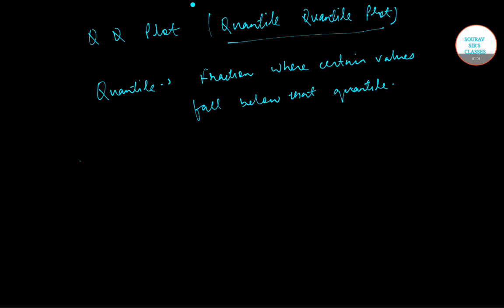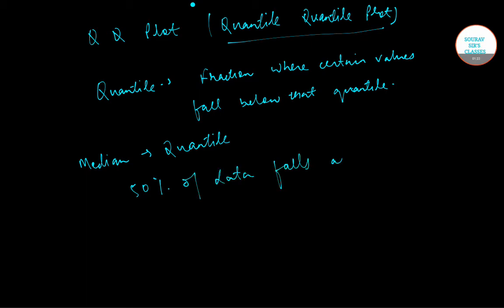For example, the median is a quantile. 50% of the data falls above it and 50% of the data falls below it. It basically divides the data into two equal halves.